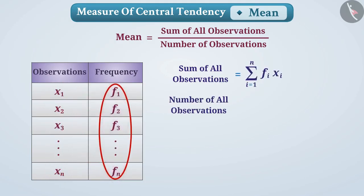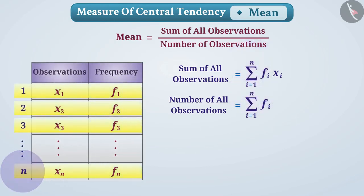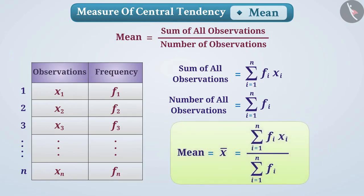And the number of all observations in this way. Remember that here n represents the total number of observations in this way. Now the mean of these observations can be written in this way. With the help of this formula, we can find the mean for given ungrouped frequency distribution. Now let's understand some characteristics of the mean.